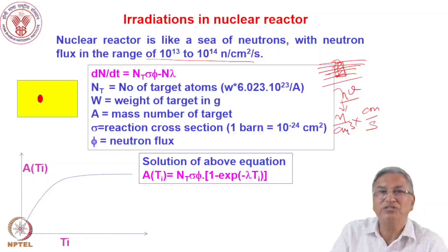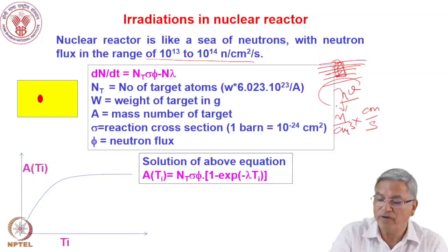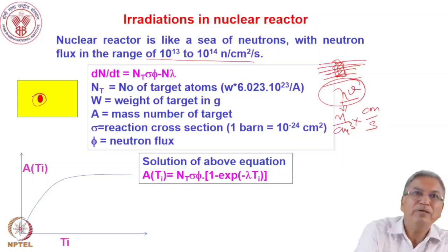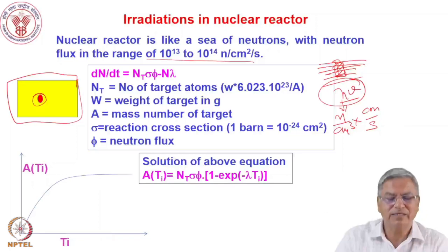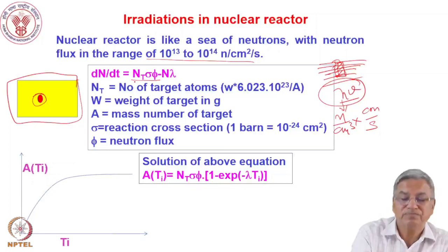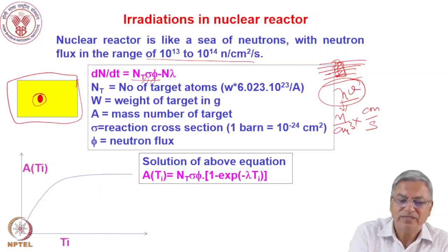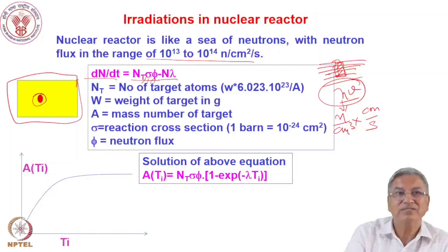Sometimes the neutrons are not thermalized and have different velocity components, so you define neutron flux as NV: number of neutrons per cc times velocity of neutrons. Now, when you irradiate the sample — the entire target is exposed to neutrons — the rate of reaction is N_t × σ × φ (target atoms times cross section times flux). When the target is activated, the active atoms start decaying at rate N×λ. So the net rate of formation is dN/dt = N_t σφ − Nλ.